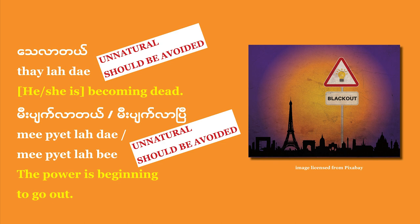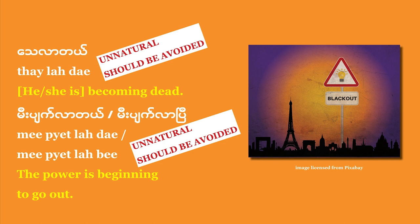Another example: mi piat te means 'the power went out.' It's rather unusual in Burmese to say mi piat la bi, as if the power outage is happening in slow motion, frame by frame, and you can watch it happening. You may have a special situation where the power outage is slowly spreading across the city and you can see it happening from one neighborhood to another — then you might say mi piat la bi. But normally, people just say mi piat te, or thaye thwabi to talk about somebody who has already passed away.